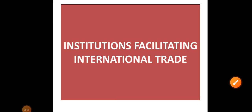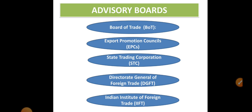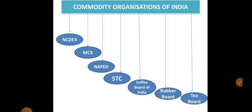Hi dears, in our paper of the course 'Institutions Facilitating International Trade,' till the last class we were discussing about various organizations that support export in India — export enhancement in the government, in the Department of Commerce, and Export Promotion Councils. Today we are concentrating on two main topics: commodity organizations of India and advisory boards. When we discussed EPCs earlier, we covered gems, precious stones, and the handloom sector — those were industry-specific EPCs.